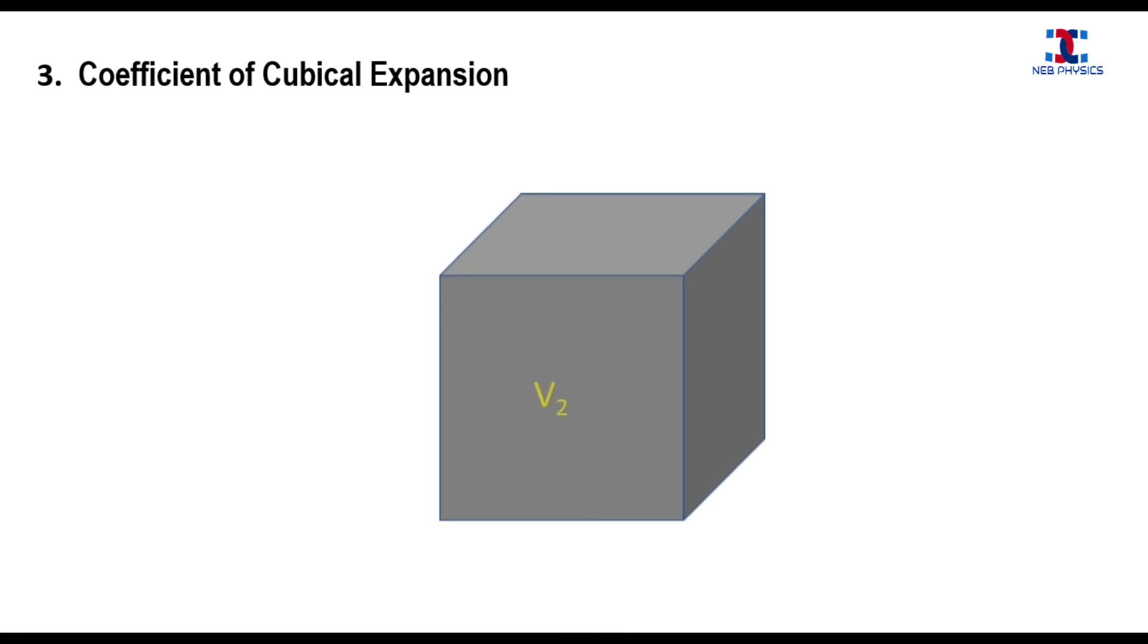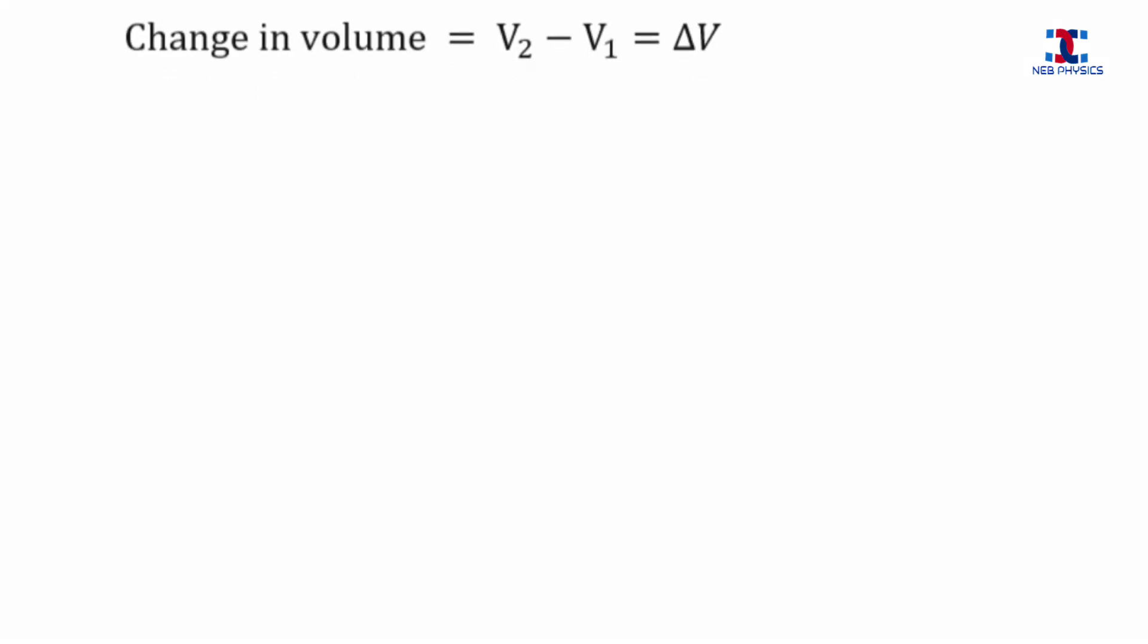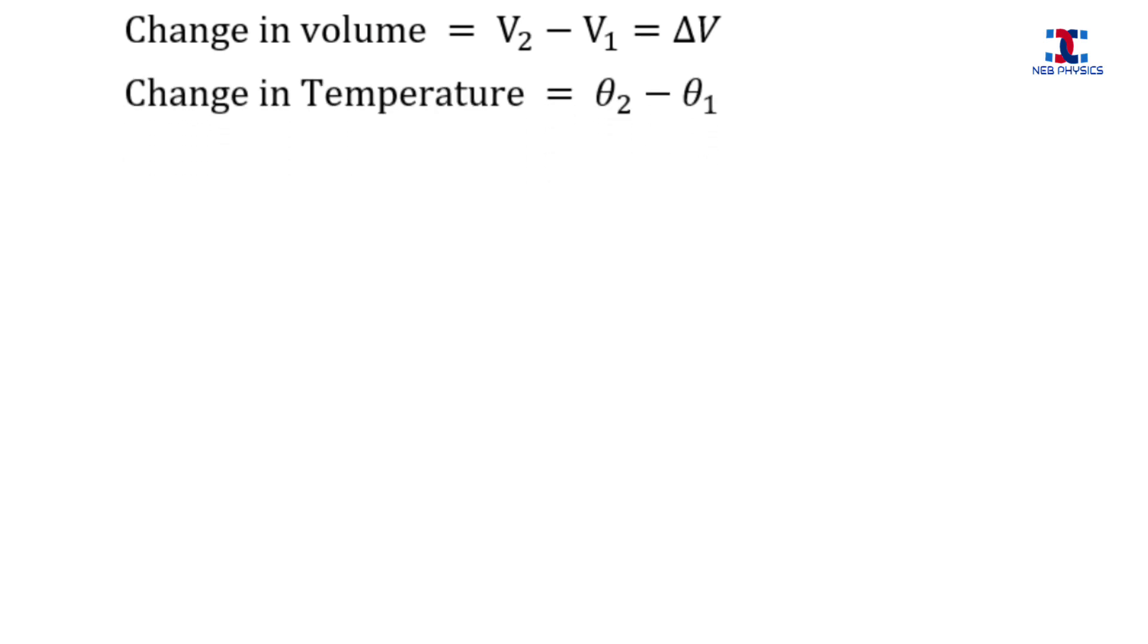After expansion, let the final volume be V2 and final temperature Theta 2 degree Celsius. Now, the change in volume is given by V2 minus V1 and that is equal to Delta V. The change in temperature is given by Theta 2 minus Theta 1.